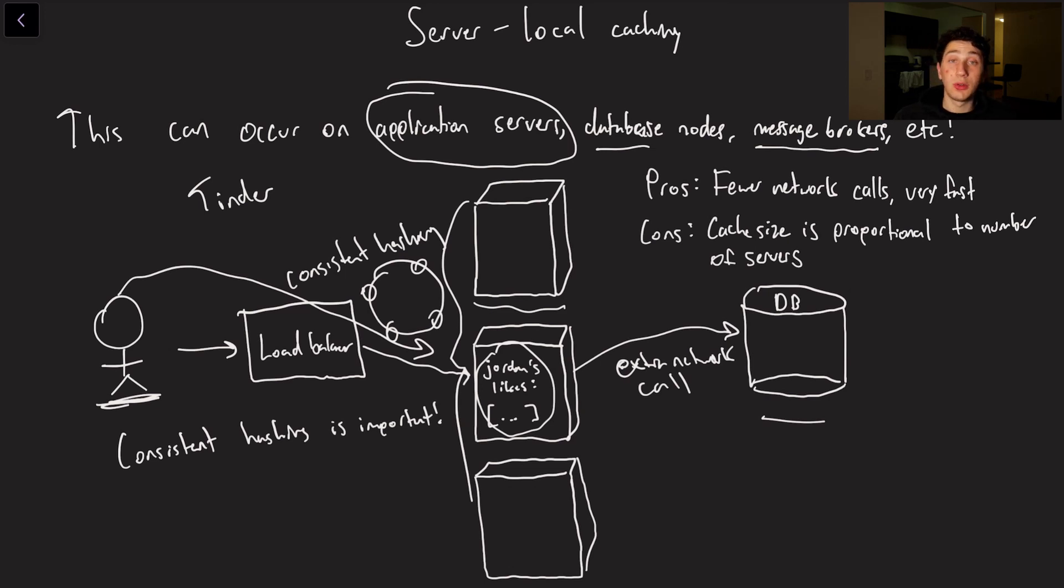The pros of doing server local caching or you know just keeping your cache local to the application server is there fewer network calls. Like I mentioned you're already going to be hitting this thing anyway, so you may as well check the cache. That makes it faster. But on the other hand, well if this guy were to go down, that cache for me is gone. And additionally, let's say we wanted even more caches.